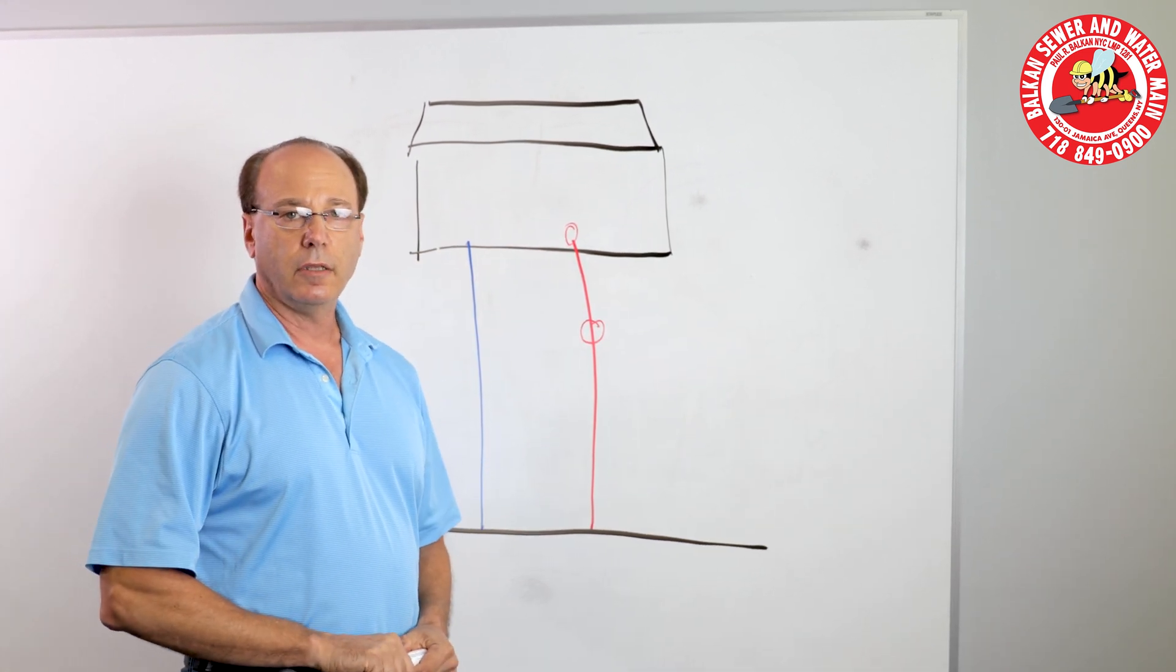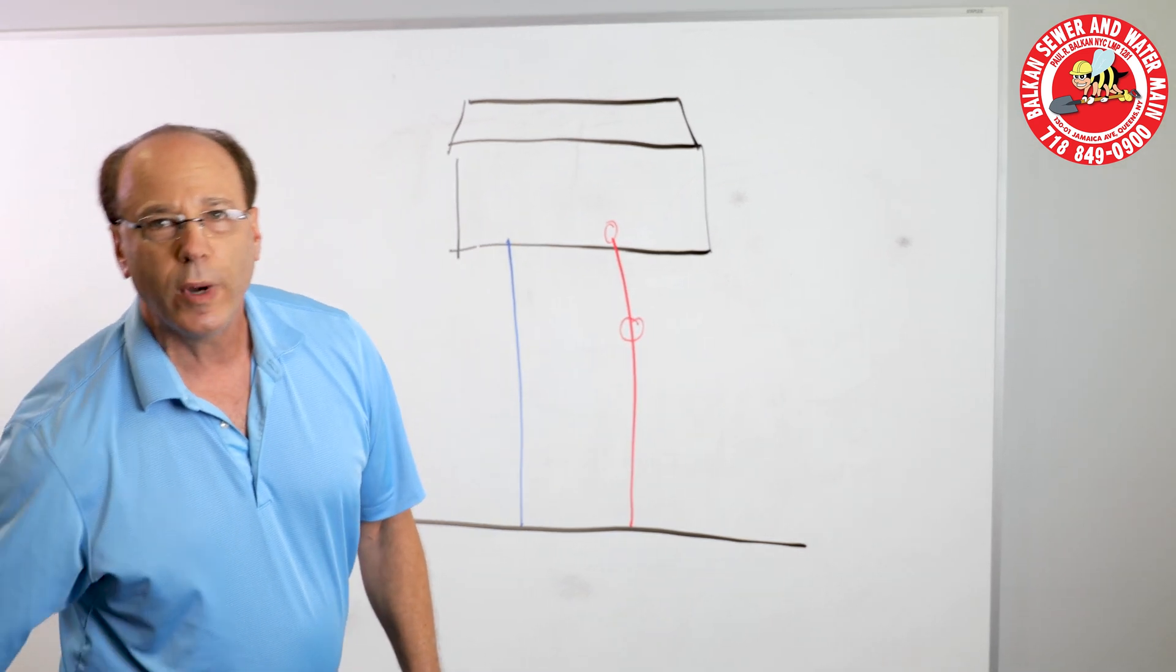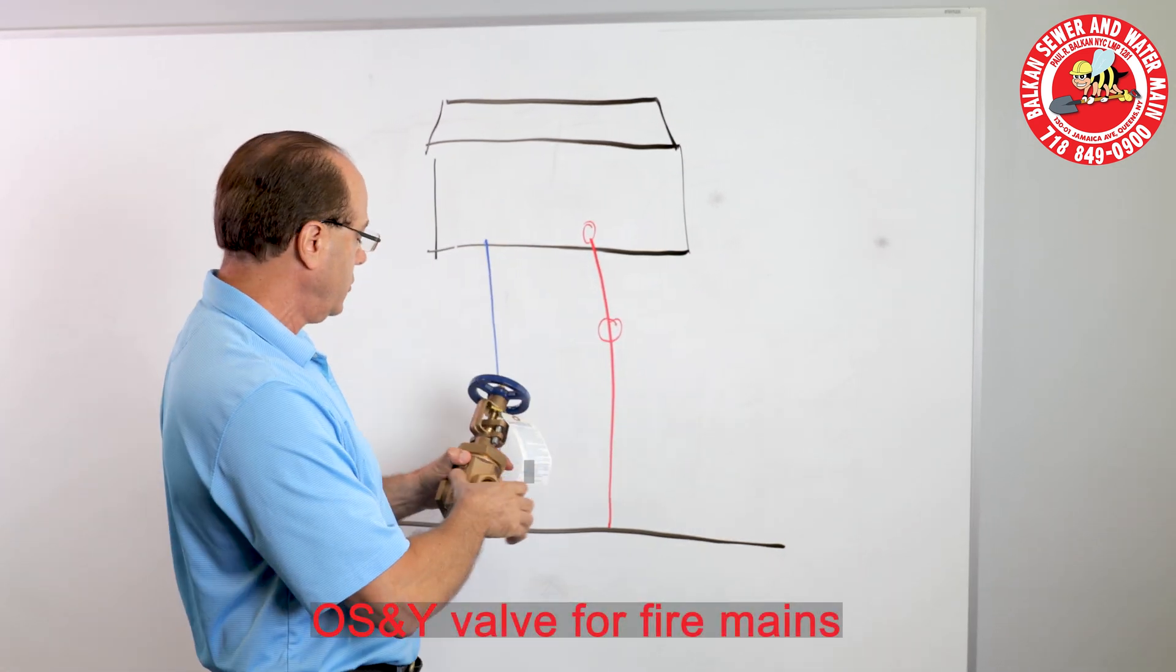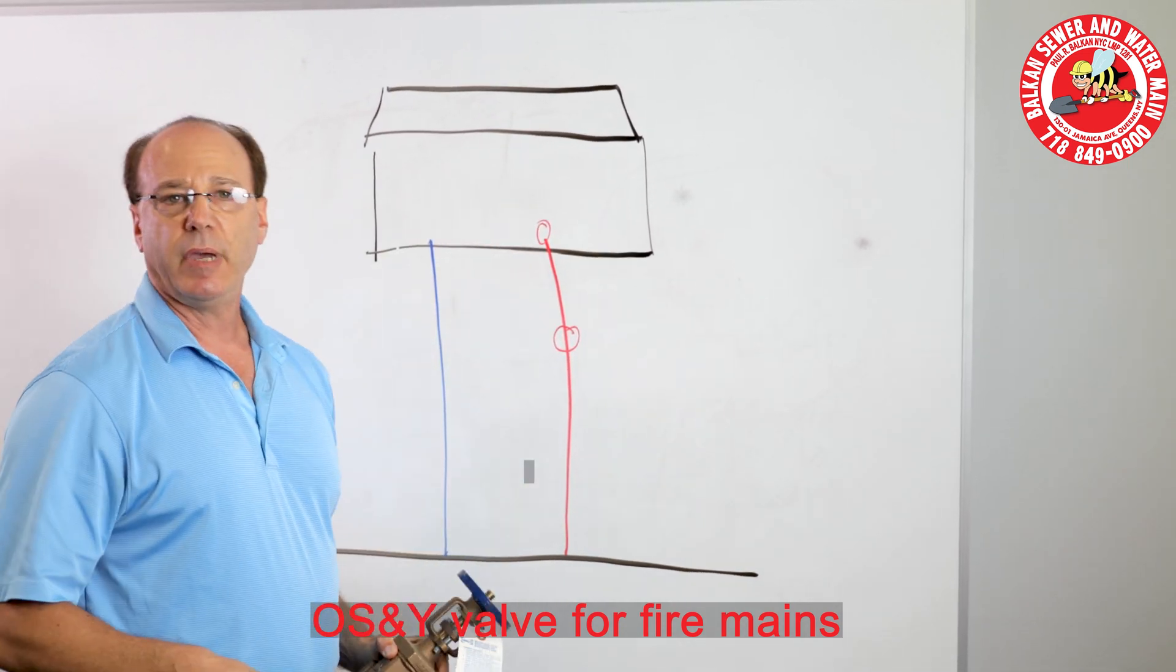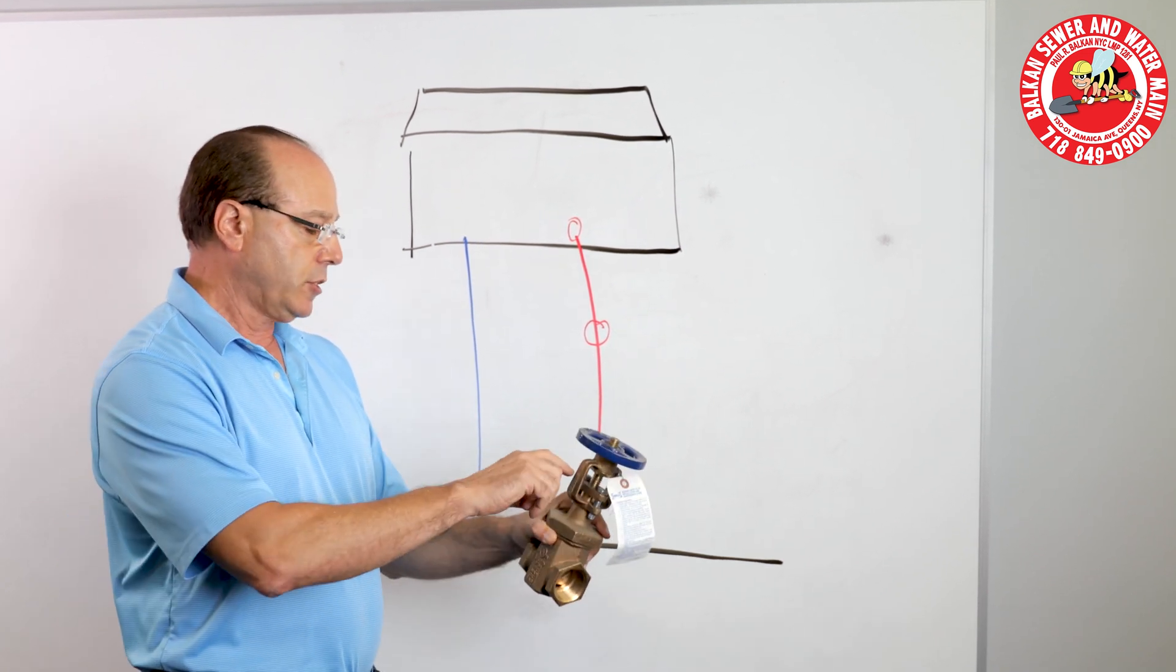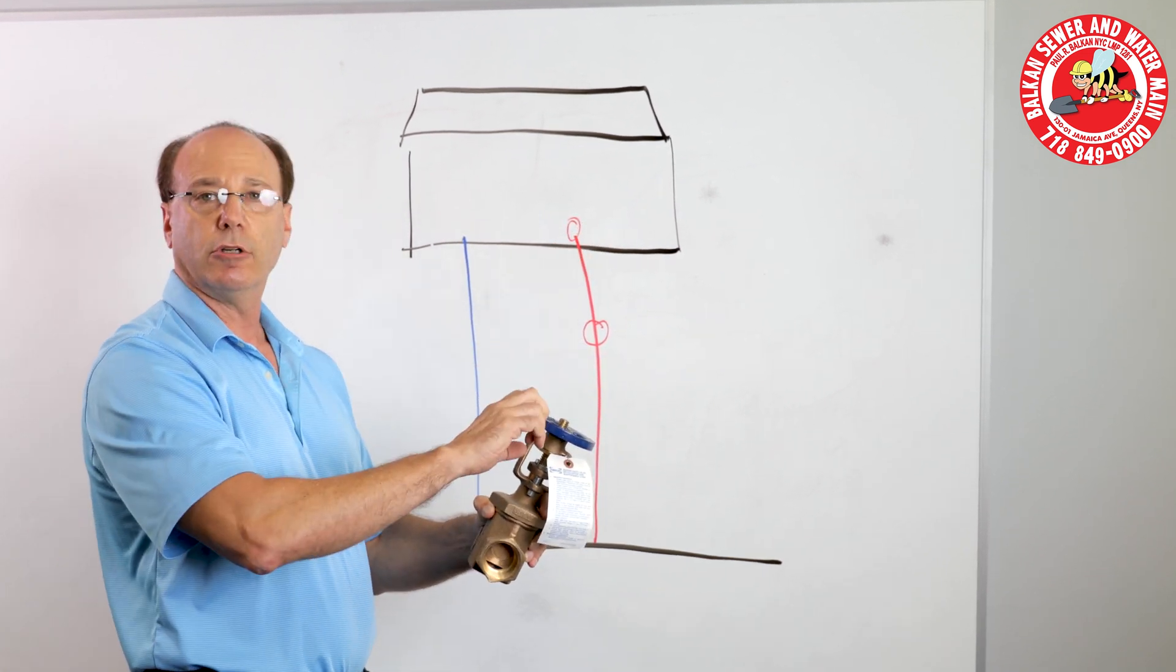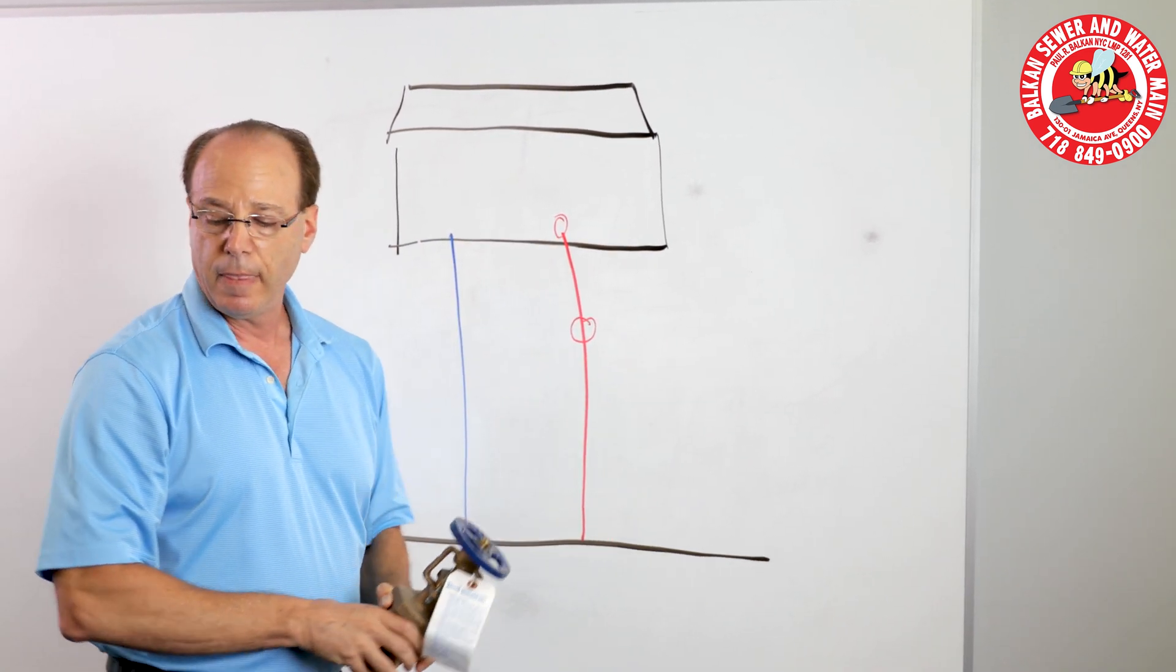And, the inside valve is also different. Anytime there's a line for fire protection, it has to have what's called an OS and Y valve. What that means is, the outer stem and yoke are exposed. Because, on a fire main, if it's dedicated, you can't test to see if the water's on or not. It's a closed system. So, this stem rises and lowers, you know, if the water's on on your fire protection system or not.